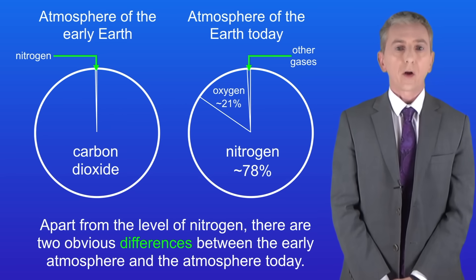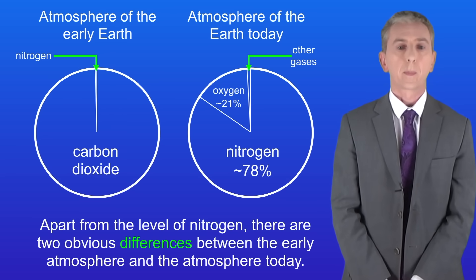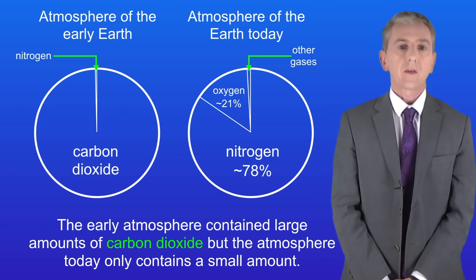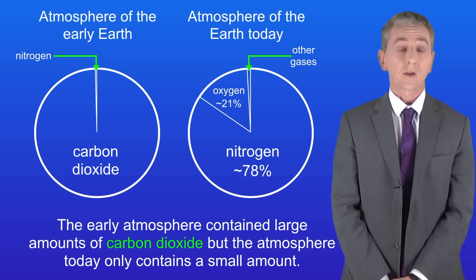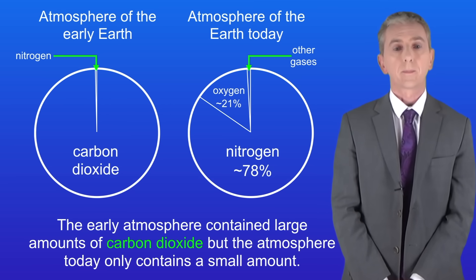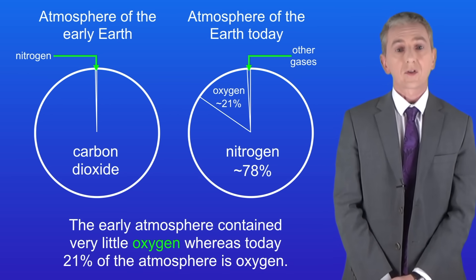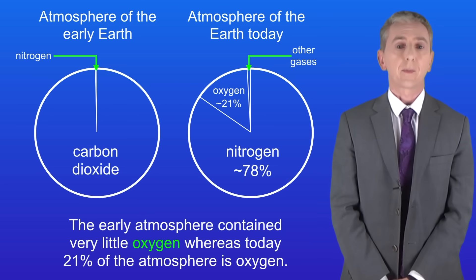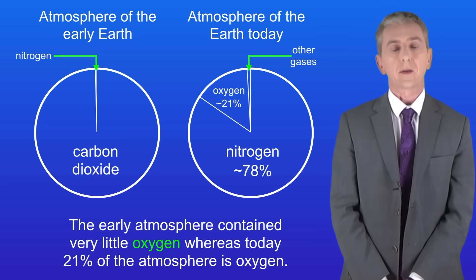Apart from the level of nitrogen, there are two other obvious differences between the early atmosphere and the atmosphere today. Firstly, the early atmosphere contained large amounts of carbon dioxide, but the atmosphere today only contains a small amount. Secondly, the early atmosphere contained very little oxygen, whereas today 21% of the atmosphere is oxygen. So let's look at how those changes happened.